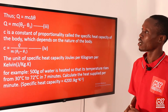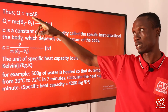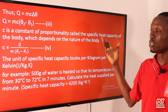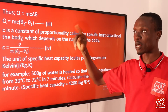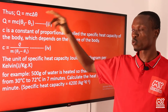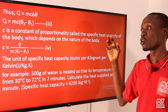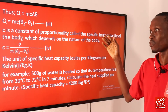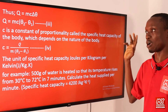Mathematically, quantity of heat Q = mcΔθ, where Δθ is the change in temperature. Here m is the mass of the body, c is the specific heat capacity, θ₂ is the final temperature, and θ₁ is the initial temperature, so θ₂ minus θ₁ represents the change in temperature. The constant of proportionality c is called the specific heat capacity of the body and it depends on the nature of the body.